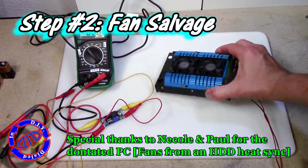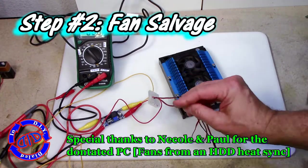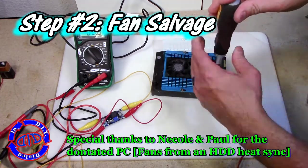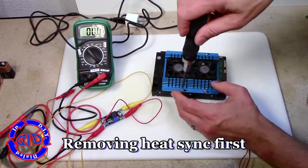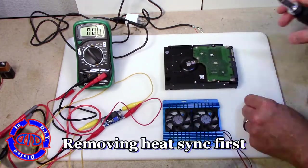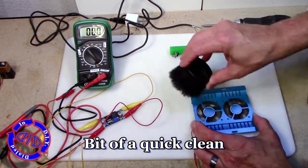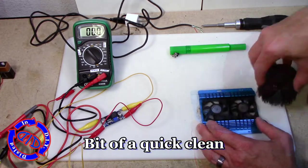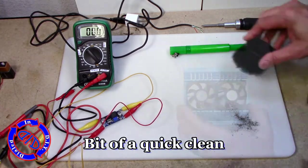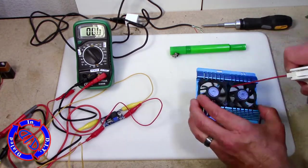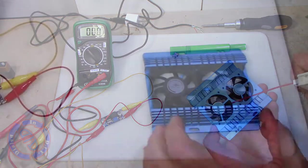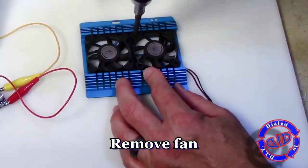I want to give a special thanks to Nicole and Paul who donated an old PC that had some wonderful parts in it like this hard drive that had a heatsink with two fans built into it. I only need one of these fans so I'm going to go ahead and separate it from its heatsink and do a little bit of a quick cleanup. Any kind of fan that's used on the inside of a computer for enough time is going to get pretty dirty and I want that cleaned up before I use this as my own little personal cooling fan.